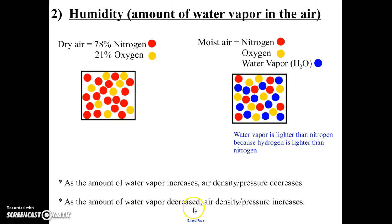If there's less water vapor, then the air will have higher density and higher pressure because now it's got a lot of heavier nitrogen in it. And if it's heavier, it has more pressure. It can exert more force.